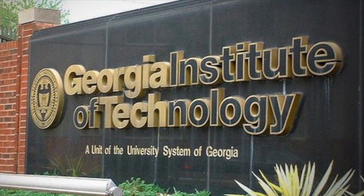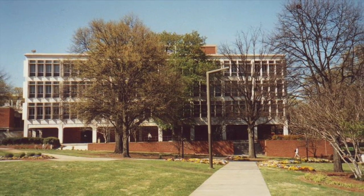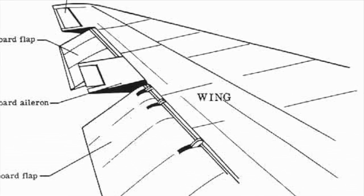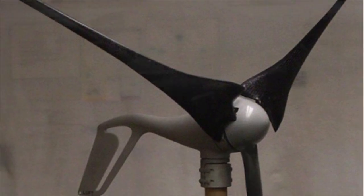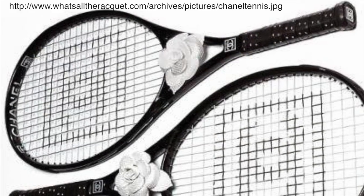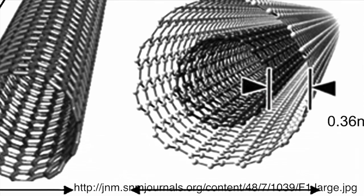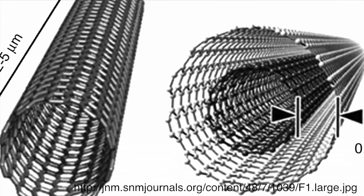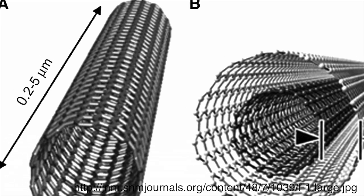Currently, carbon fiber is used for various structural applications such as airplane wings and fuselages, windmill blades, high-performance vehicles, and sporting goods. Carbon fiber composites make these structures much lighter and stronger than structures made from other materials such as metals.